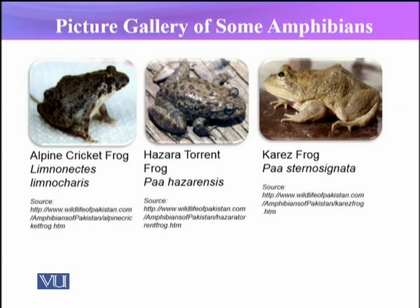Another glimpse of the Ranidae family — the frogs included here are the alpine cricket frog, Hazara torrent frog, and Karez frog. From the photos you can clearly differentiate each frog — for instance, the girdle which is not much hunched out, as compared to the Karez frog which is hunched out.